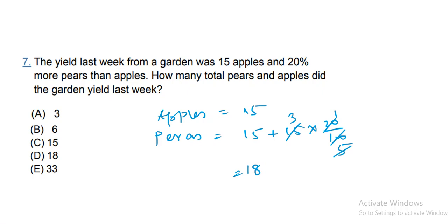How many total pears and apples did the garden yield last week? Apples is 15 and pears is 18. 15 plus 18, that means total 33. So the correct option here is option E, the correct option.